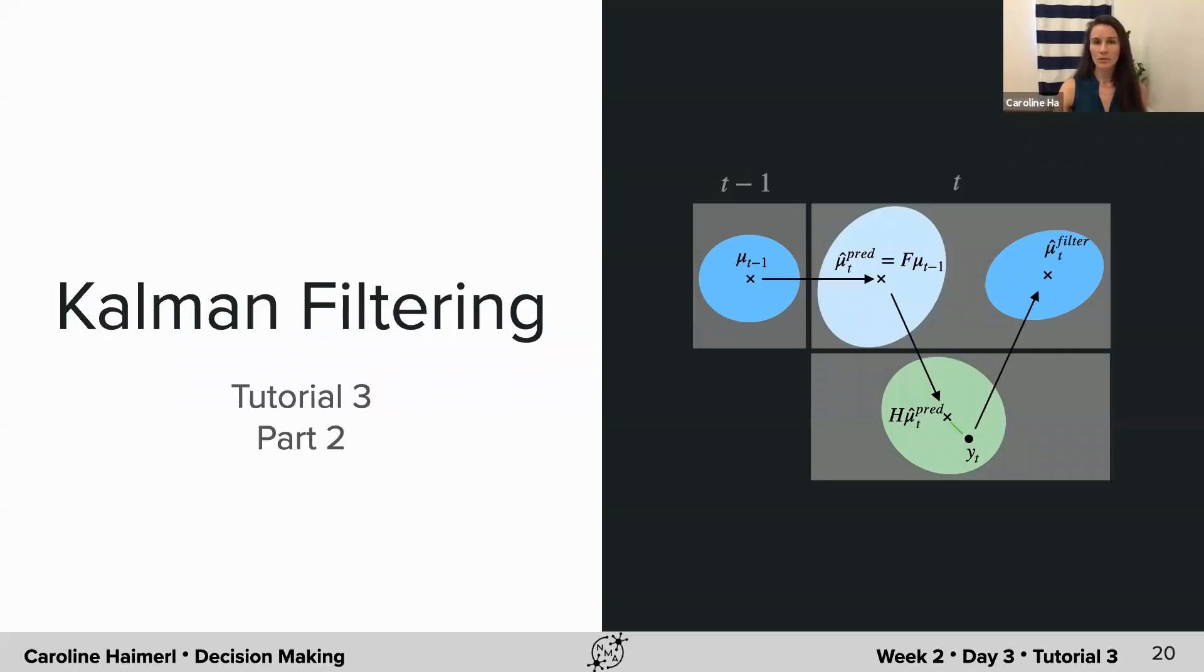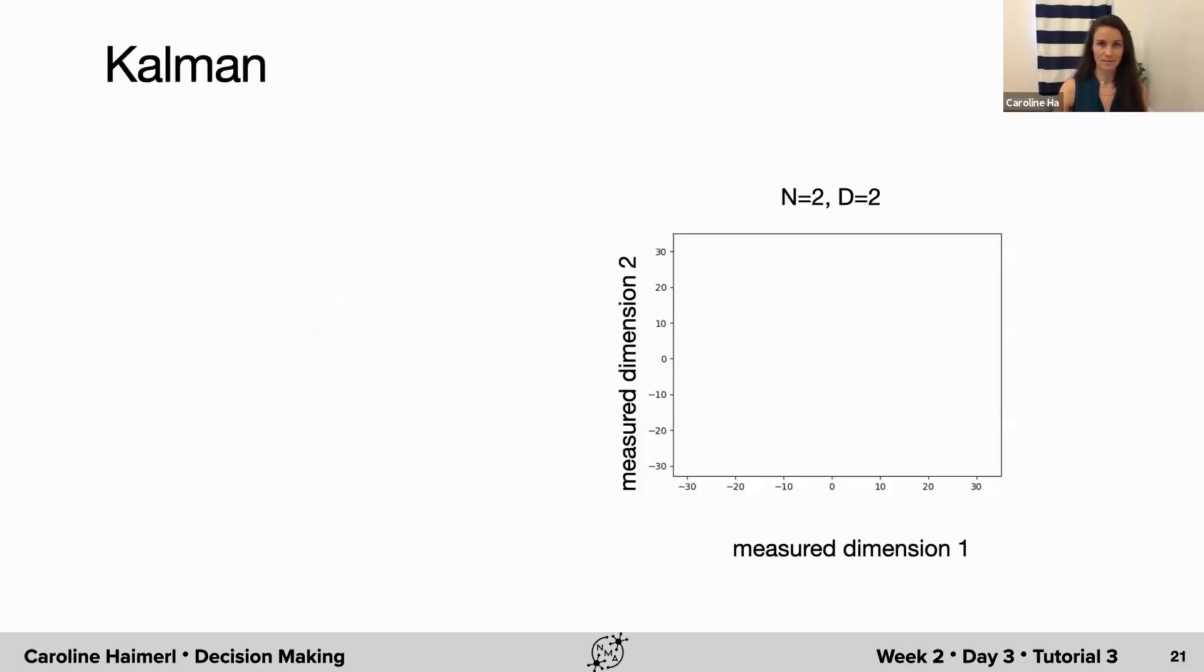Next, we're going to think about how to infer the latent state distribution from the data. This is where we use the Kalman filter. If we are given a dataset, we typically do not know about the latent state trajectory since it is per definition hidden. We instead need to infer it directly from the data.